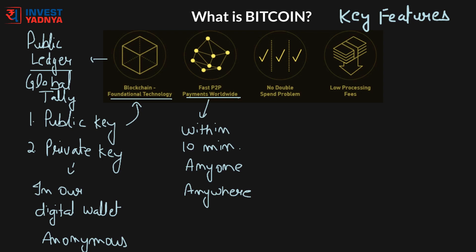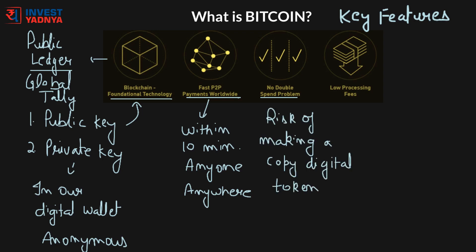Another feature is no double spend problem. Double spending is a problem unique to digital currencies because digital information can be easily reproduced. With digital currency there is a risk that the holder could make a copy of a digital token and send it to a merchant while retaining the original. With blockchain technology and its open source character, the Bitcoin network essentially works by using individuals' self-interest for the collective good. A network of tech-savvy users called miners keeps the system honest by contributing their computing power to the blockchain, preventing anyone from spending the same bitcoin twice. Miners are rewarded with the occasional bitcoin, and this is also how new bitcoins are created.